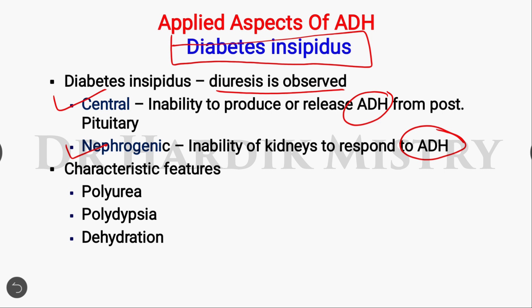The characteristic features include polyuria, which means an increase in urine output; polydipsia, which means an increase in water intake; and dehydration, which means a decrease in water levels inside the body.